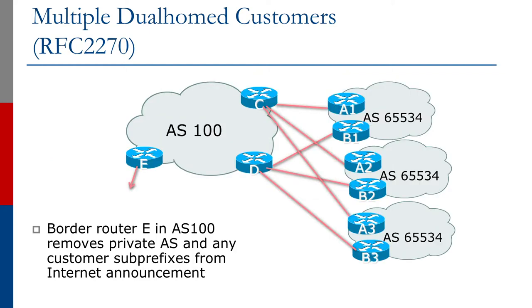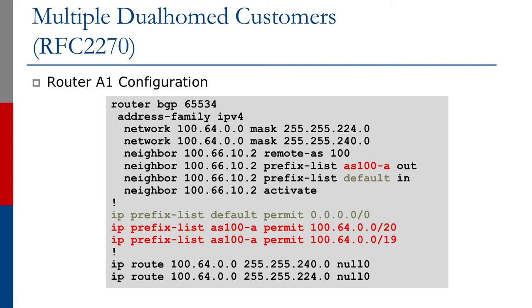The nice thing about this is the upstream provider can template the configuration for all the Router A's and Router B's that go to the customer site, which can help customers with their configurations. These are the same as in the examples we saw earlier. Router A1 might be using a slash 19 and a slash 20, and the prefix list is the same as in the earlier example, allowing the slash 19 aggregate out as well as the slash 20. Same with the Router B configuration. But our focus is on the upstream provider now.